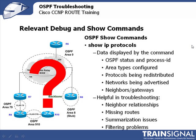First, we're going to review show commands. But as with EIGRP and practically any other protocol, the show IP protocols command can be particularly helpful. It will display your OSPF status and process ID. It will show the different area types that are configured — normal, stub, NSSA, and so forth. It will show you any protocols that are being redistributed, what networks are being advertised, and neighbors or gateways.